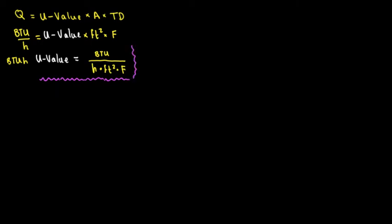The U value has another name: thermal transmittance. The U value is part of building science. Whenever we're making a heat load calculation design, we need to know these numbers. They are already provided depending on the material, the wall type, and the insulation — so this is already a given; we don't have to calculate it ourselves.